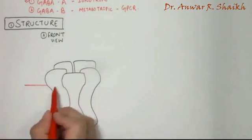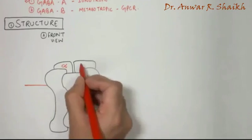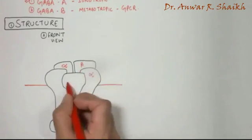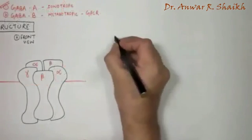And these five subunits are two alpha subunits, two beta subunits, and one gamma subunit arranged around a central pore.